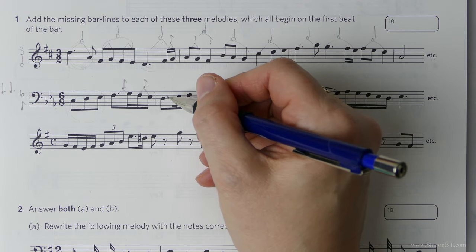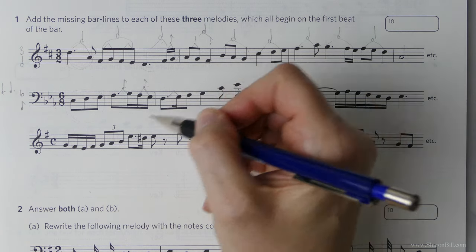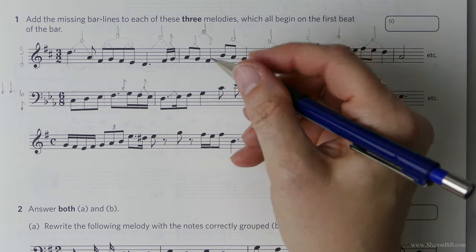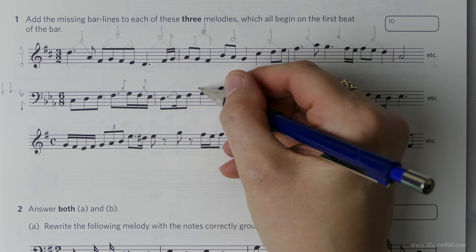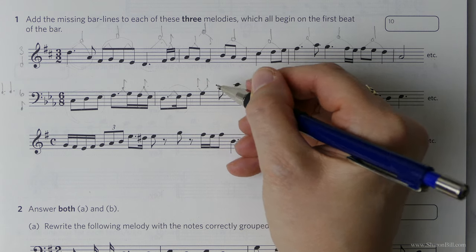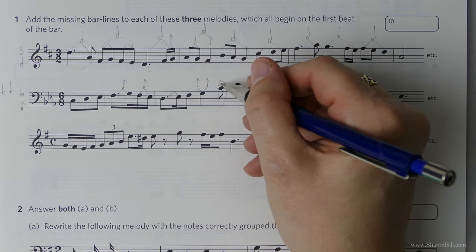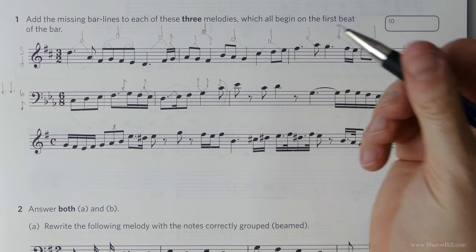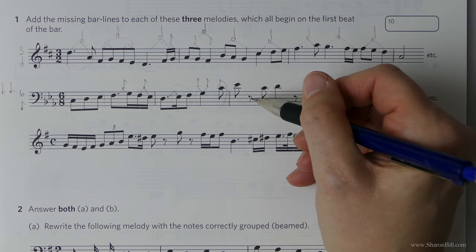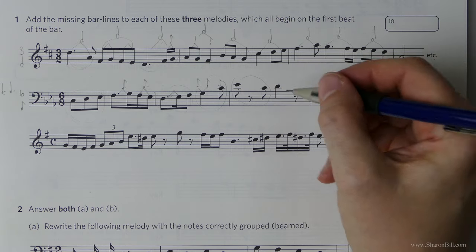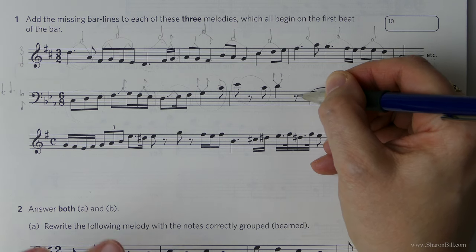Here we have one and a half quaver beats; here's the remaining half of that quaver beat, so there's the second beat, there's the third - that's our first group of three. Then this crotchet divides into two quavers: one, two, three - that's our second group of three, making six beats, so bar line. Don't forget rests count as well: one, two, three - a quaver rest there's our first group of three, then a crotchet divides into two quavers: one, two, three - so there's our bar line.